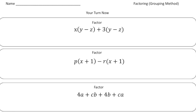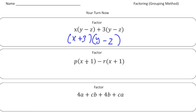Alright, welcome back. Let's see how you did with these practice problems. Here we have x times y minus z, plus three times y minus z. Notice inside the parentheses we have the same terms — the y minus z. So we can just rewrite this as x plus three times y minus z. And there it is. This one down here is pretty easy too, because we have x plus one in parentheses, and we're multiplying both the p and the negative r by the x plus one. So it's going to be p minus r times x plus one.